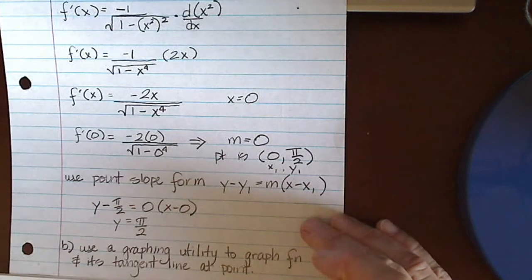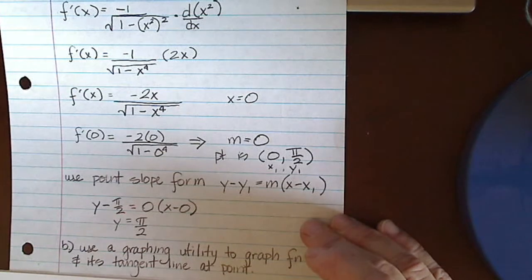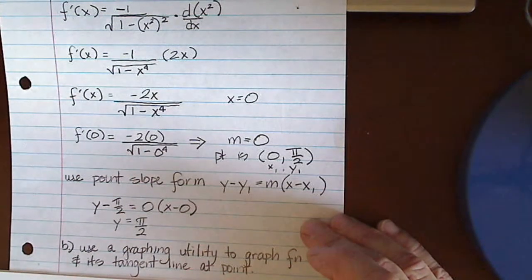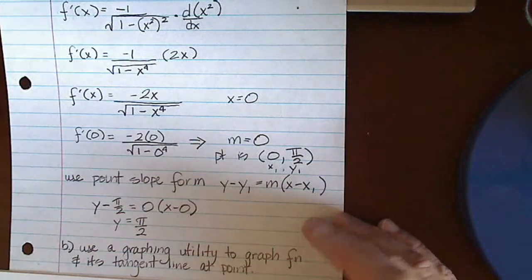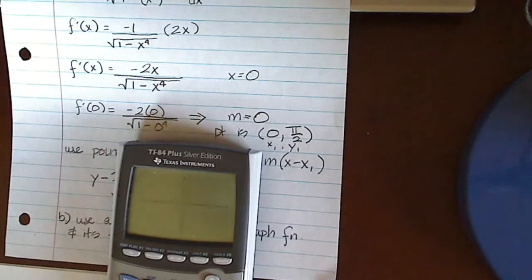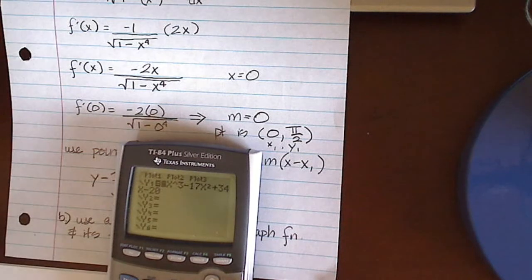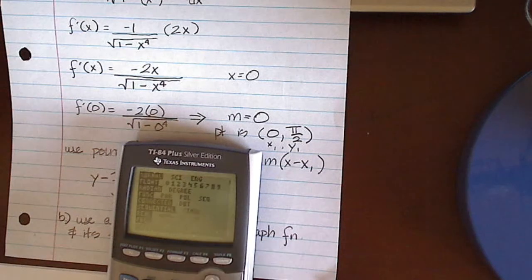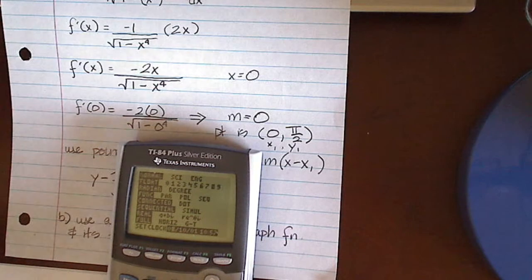Now our next step is to use a graphing utility to graph the function and its tangent line at this point. So what we're going to do is pull out our calculator, turn it on. I've got to go into y equals and clear out what's there. Go to my mode and make sure I'm in radians.